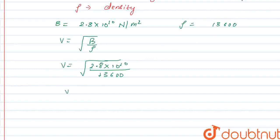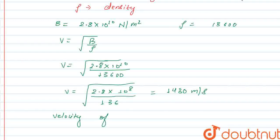So V is equal to 2.8 into 10 to power 8 upon 136, root under. So calculating this, it comes to be 1430 meter per second.